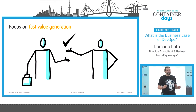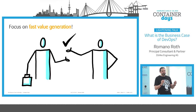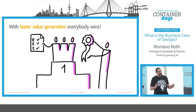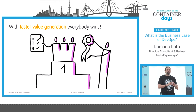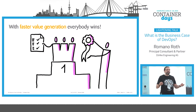Now you have the tool to convince your decision maker about the DevOps transformation, so that you can get the money for it. It is essential that you focus on fast value generation, because with that, not only your project or product will be successful — the whole enterprise will be successful. You will have happy customers who are happy with your features and the speed at which they receive them, and they will pay you for that. With DevOps, everybody will win.